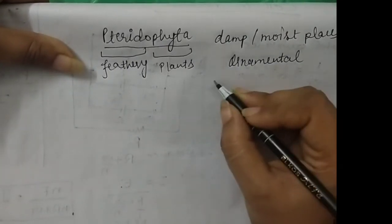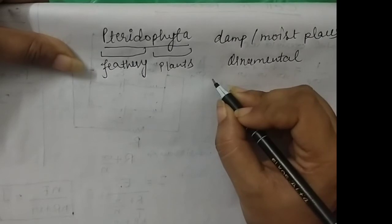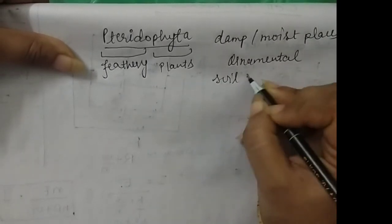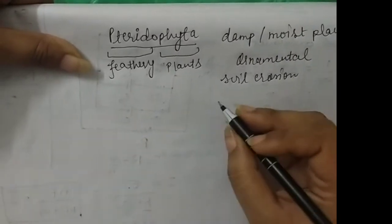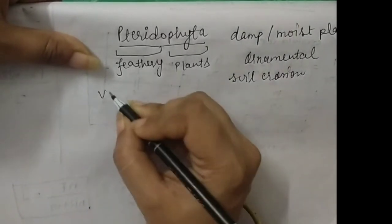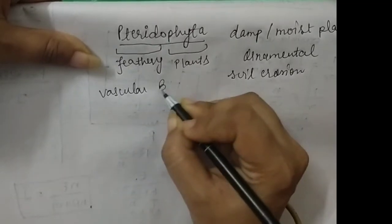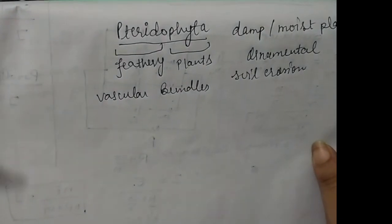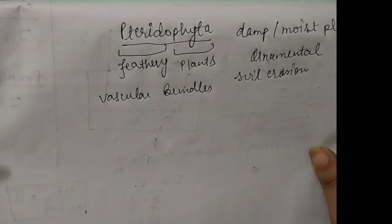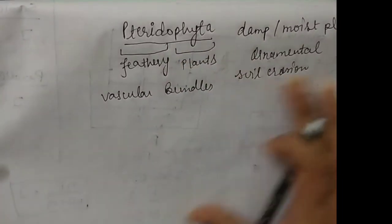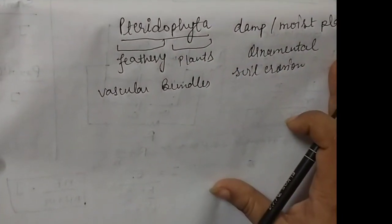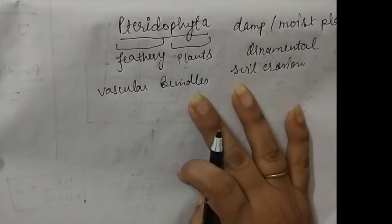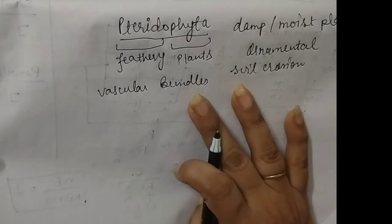They are anchored to the soil with the help of roots and basically they prevent soil erosion. These are the first land plants which have vascular bundles. They have a fully organized body and every part of the body has xylem and phloem — it means every body portion has transportation tissue to carry food, water, and other things.